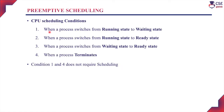CPU scheduling takes place under four conditions. The first condition is when a process switches from the running state to the waiting state. The running state is when the process is executing with the CPU, and the waiting state occurs when an I/O request is raised. When a process switches from running to waiting, CPU scheduling is required.